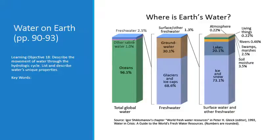The content in this presentation is covered on pages 90 through 93 of your textbook, and it's meant to help you achieve learning objective number 18, which is to describe the movement of water through the hydrologic cycle and to list and describe water's unique properties. Be sure to skim those pages before watching the video, and also be sure to read the chapter carefully before you attempt the quizzes on the Canvas site.